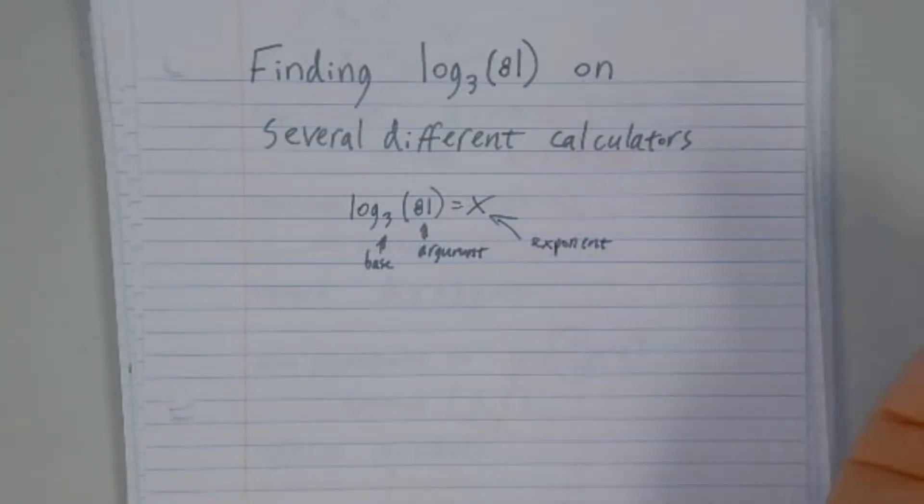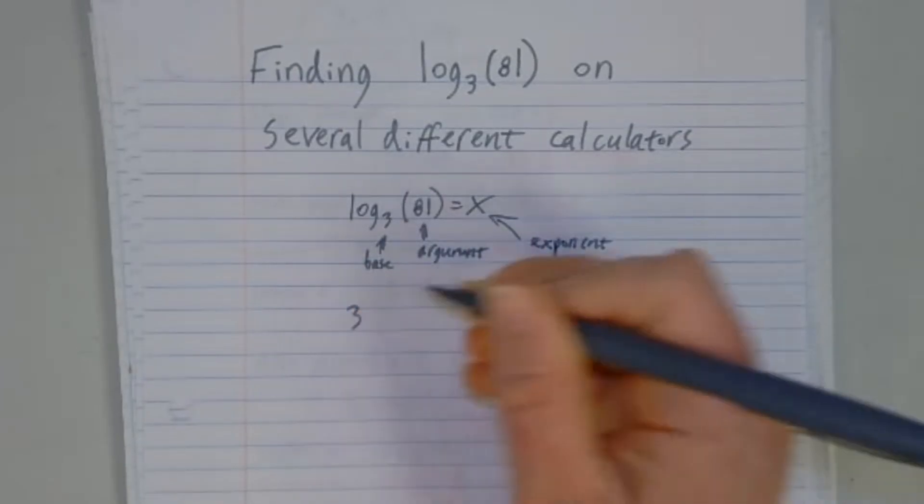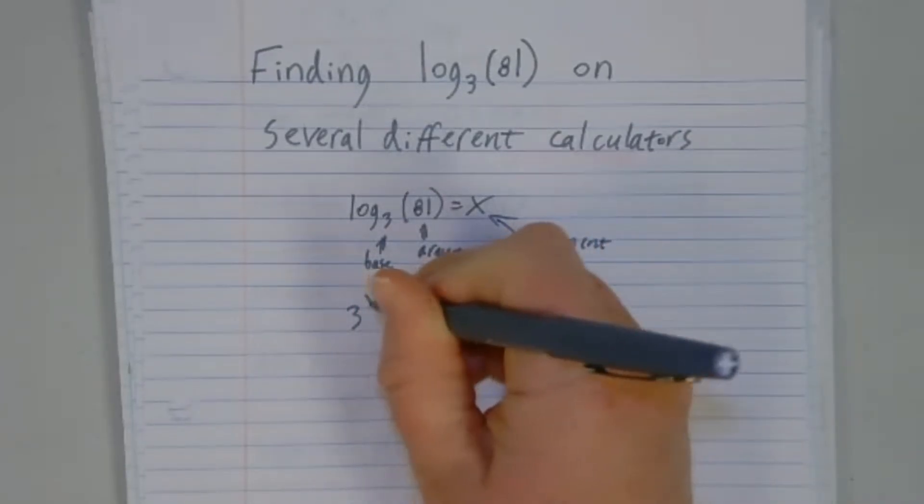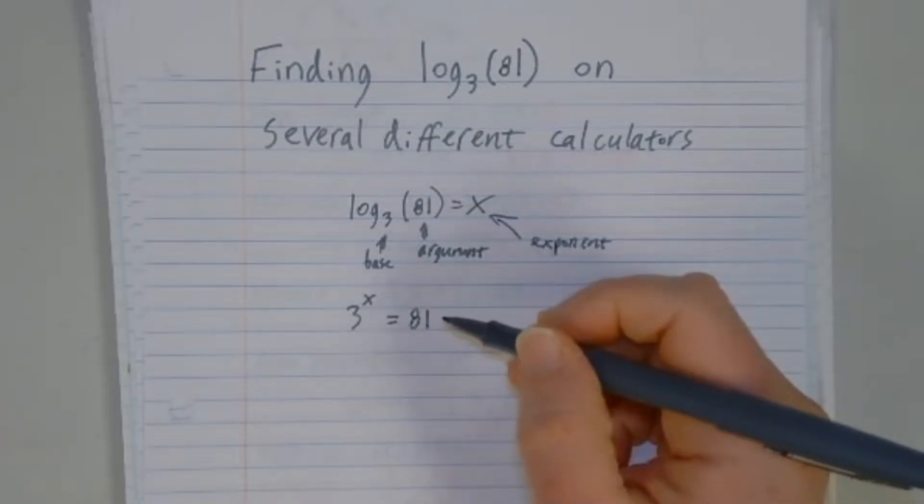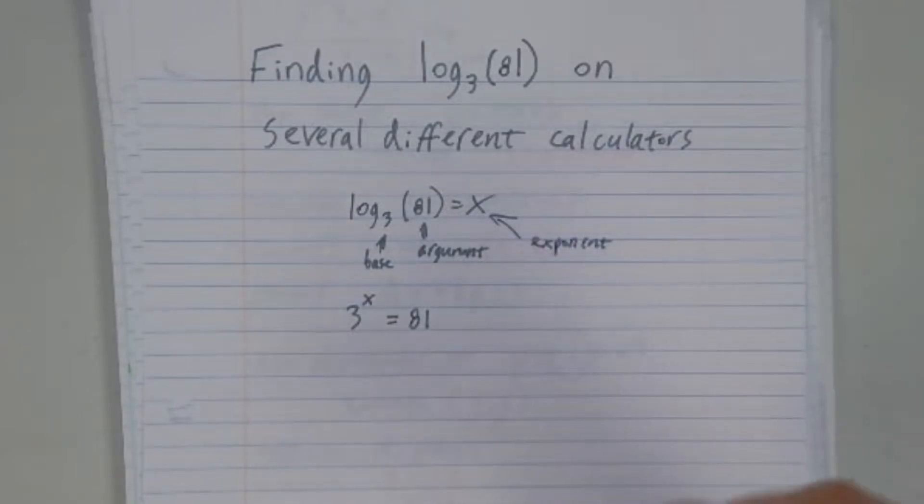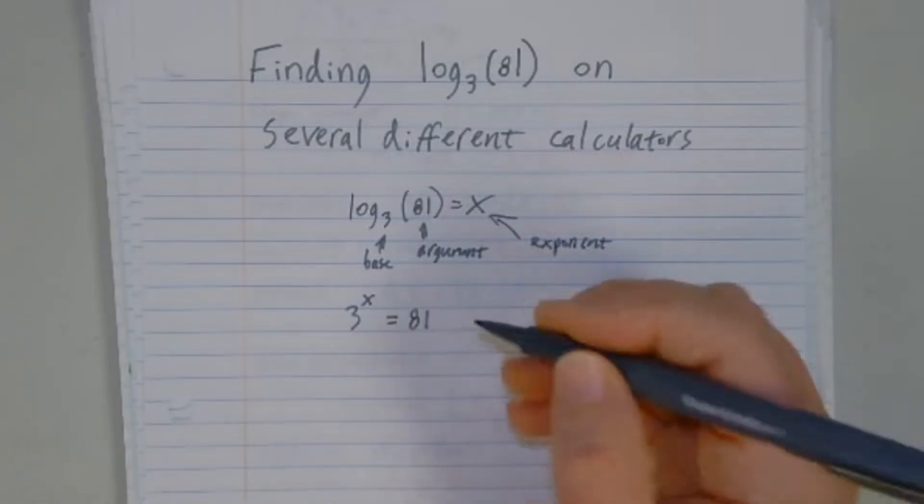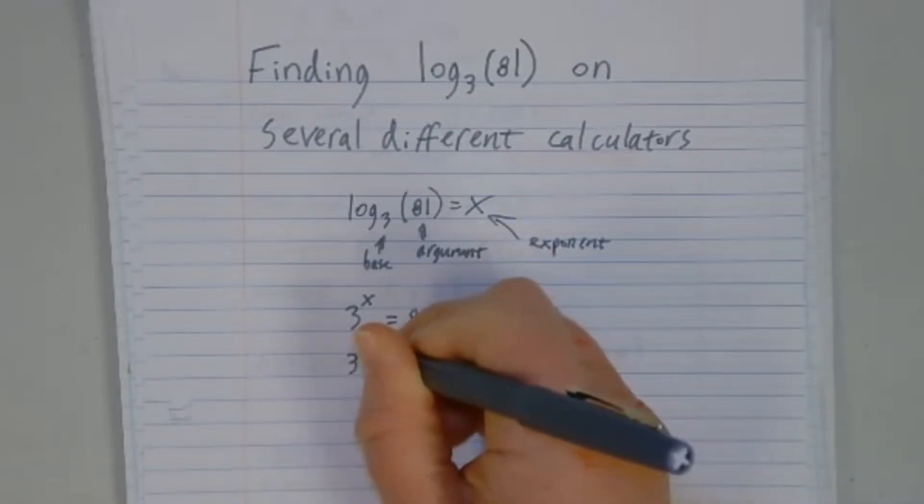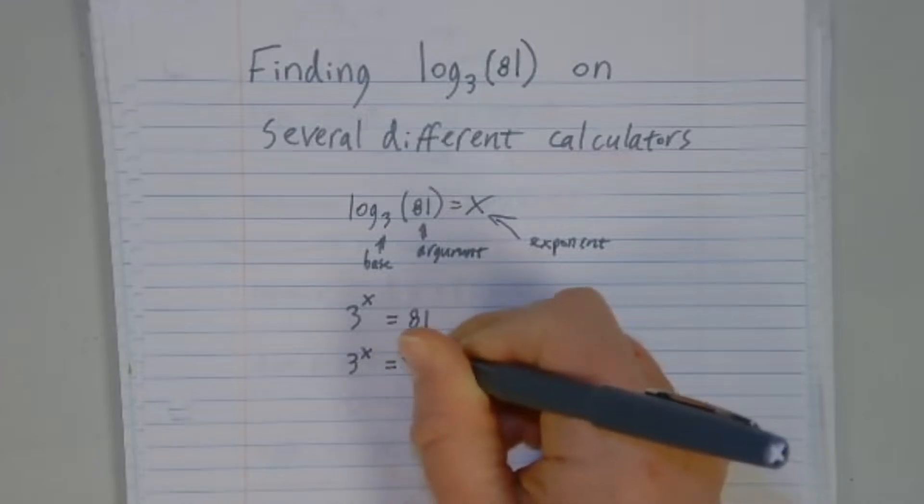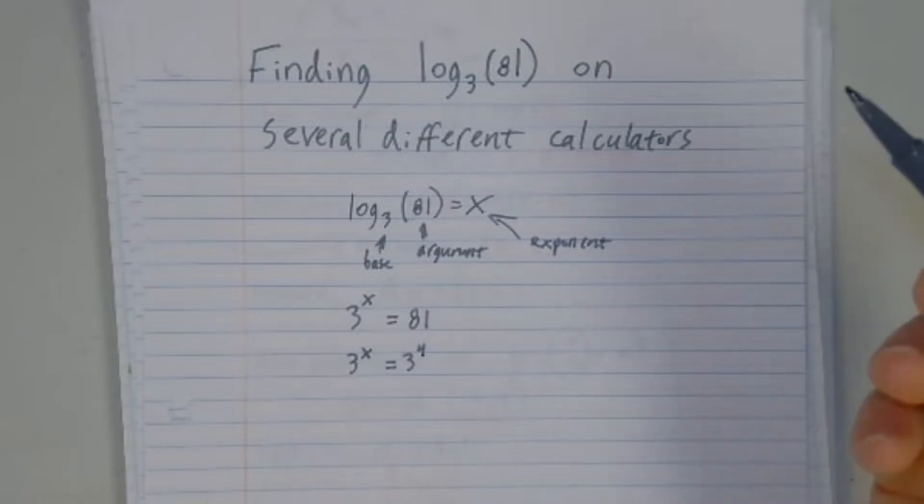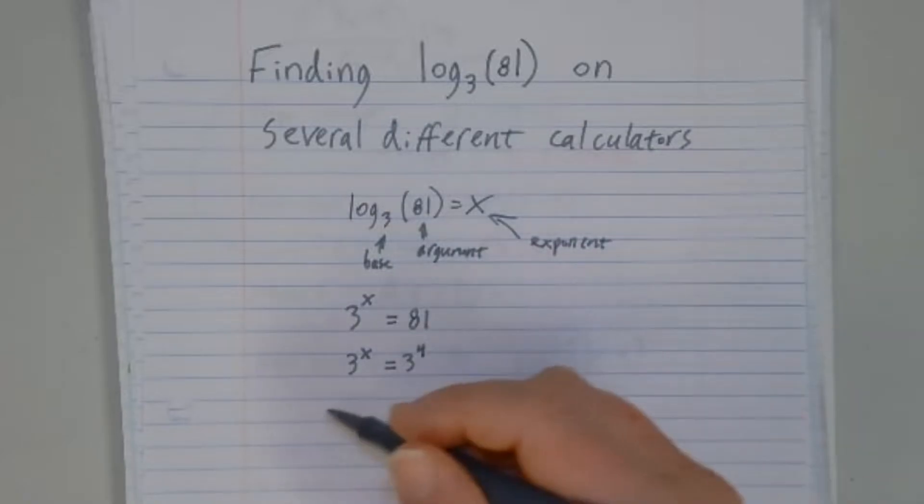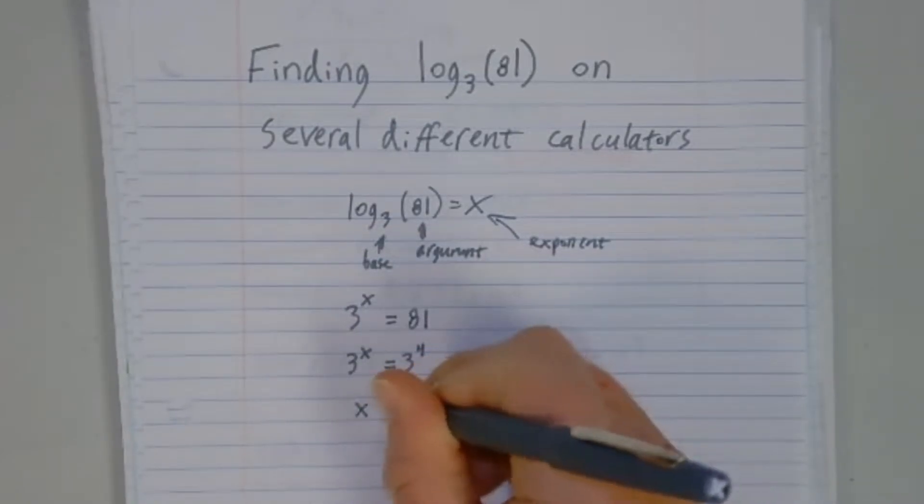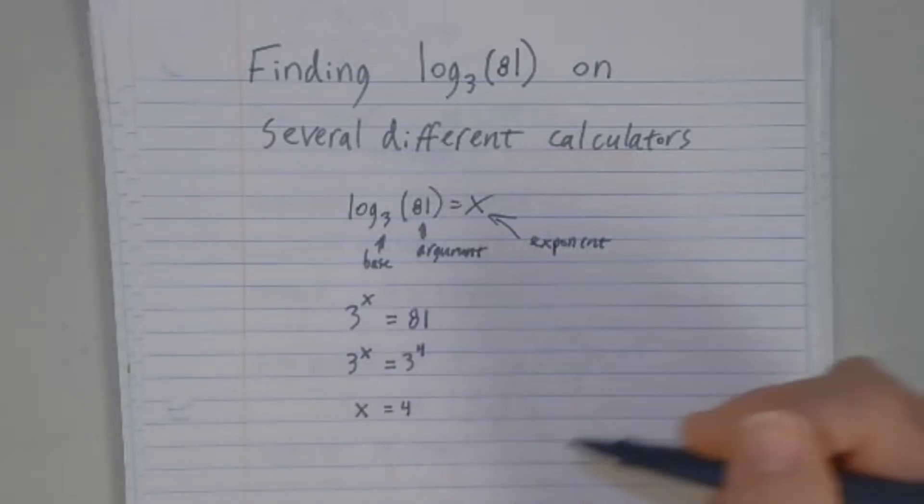And here's our exponent. So if we rewrite this in exponential form, there's our base, that's 3. There's our exponent, that's x. And that would equal 81, our argument. 81 is 9 times 9, and 9 is 3 times 3. So 81 is 3 to the 4th. And since these now have the same base, I can see that x must be equal to 4.